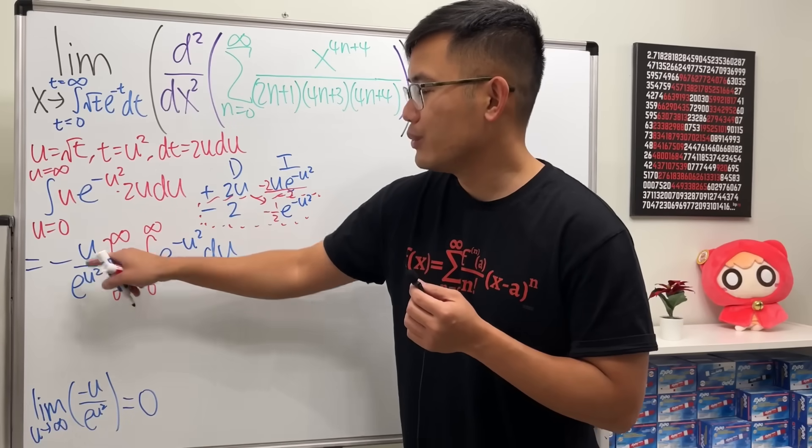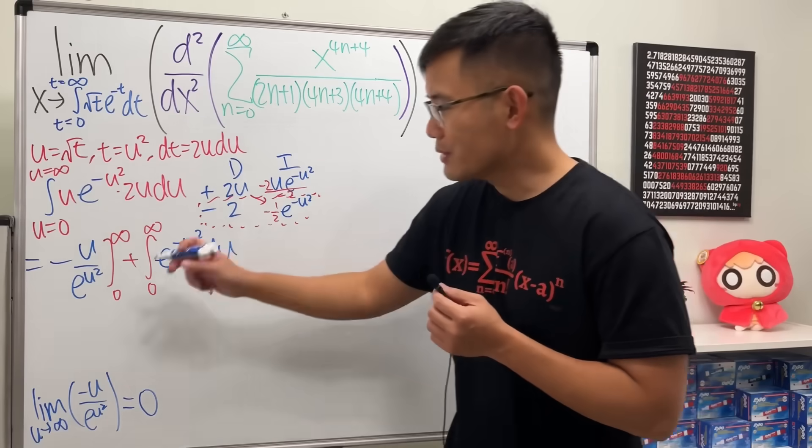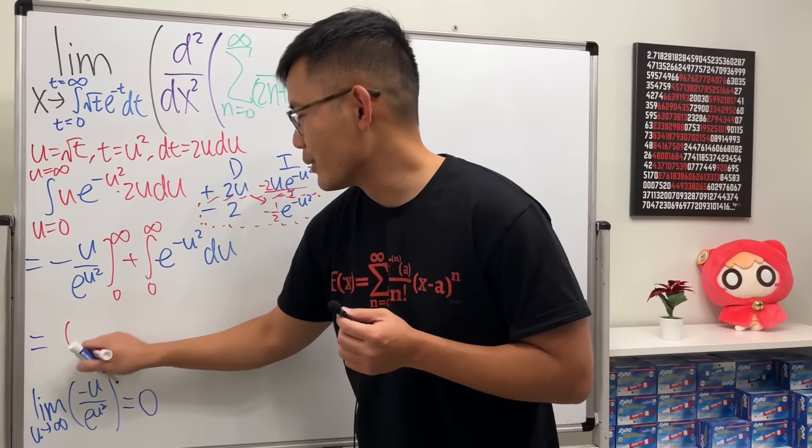So that will give us 0. And when we put 0 into here, thanks to the u on the top, we will also get 0. So the first part is just equal to 0. So nice, huh?